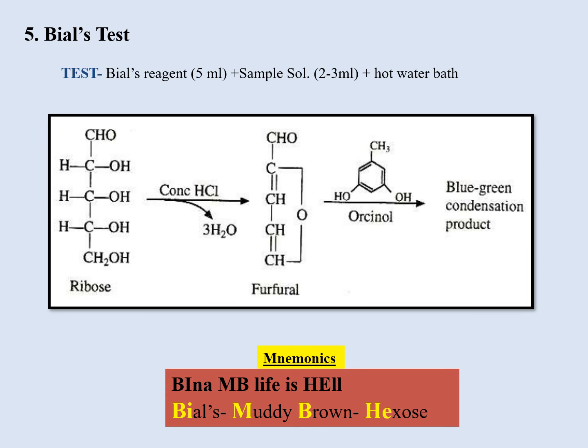Next we have Bial's test, for which the mnemonic is 'Bina MP life is hell.' 'BI' stands for Bial's, 'MB' is for muddy brown, and 'HE' is for hexose. This tells us that in Bial's test you get a muddy brown color and it shows the presence of hexose.